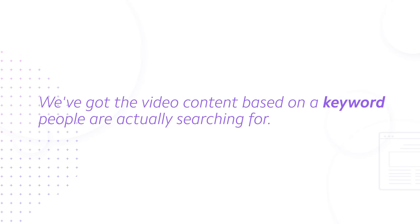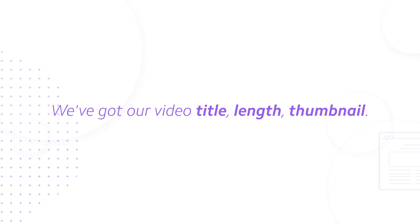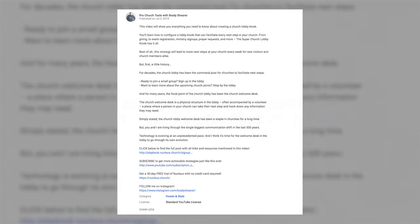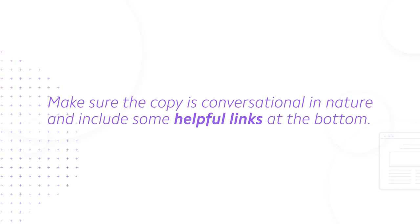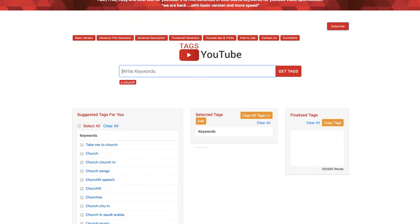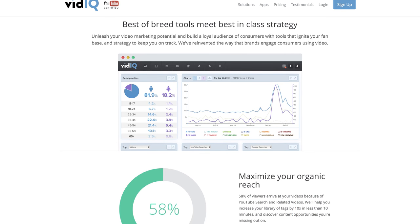Okay, so to summarize to this point: we've got the video content based on a keyword people are actually searching for, we've got our video title, length, and thumbnail. Honestly, if this is all you did, you'd be in great shape. But let's keep optimizing and take it one step further. Now that you're ready to publish your video, let's make sure we add a great description. Put your keyword in the first paragraph of the description. Make sure your description is 150 words or longer — in the case of my church lobby video, the description was 287 words. Make sure the copy is conversational in nature and include some helpful links at the bottom.